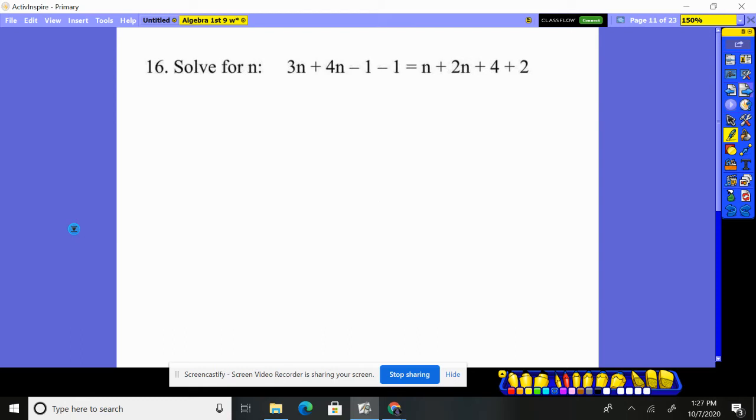Same thing. Put together what can be put together before you move it. 3n and 4n is 7n. Lose one, lose one more. You've lost 2. n plus 2n is 3n, and 4 and 2 is 6. I now go ahead. I see 7n on the left, 3n on the right.